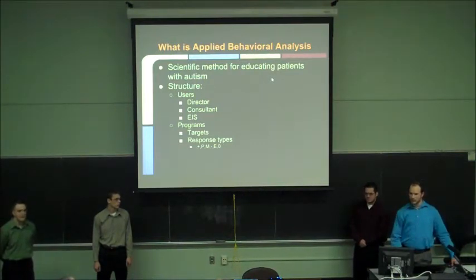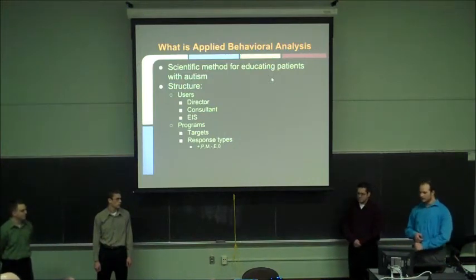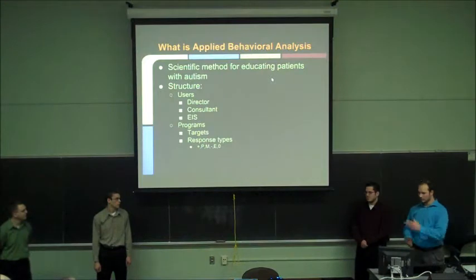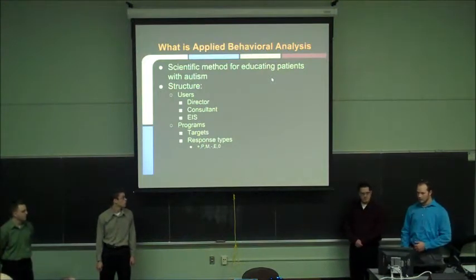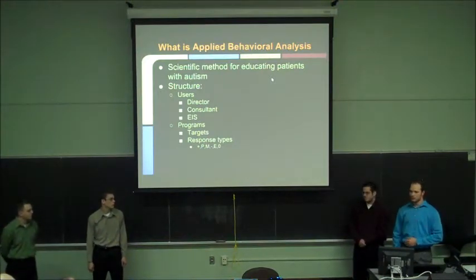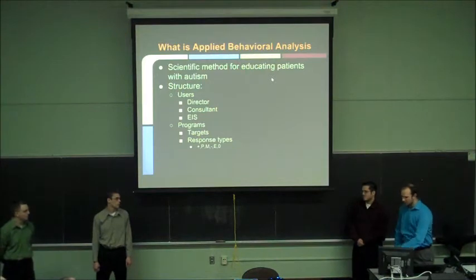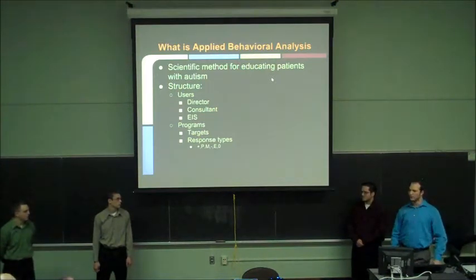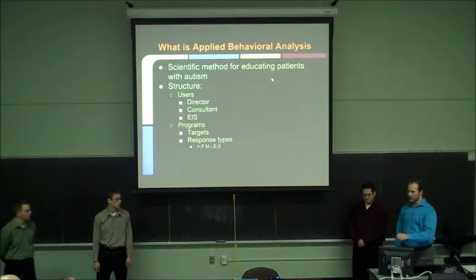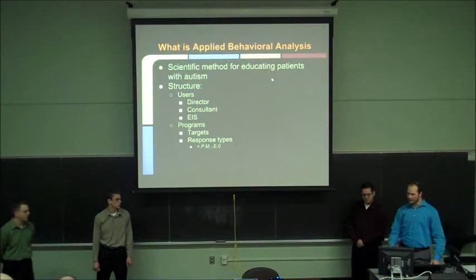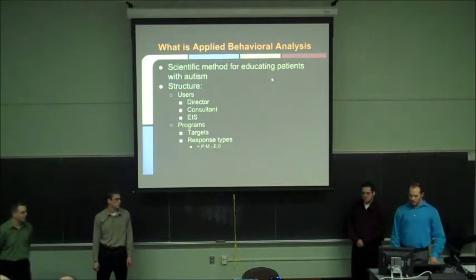There are different types of responses for the data collection. A plus sign indicates they did it perfectly — you tell them to pick up a pen, they picked up a pen. P means they were prompted, so you had to tell them and show them the pen and then they did it. M means you model it, so you would actually take their hand, take them to the pen, and show them how to physically do it so they get that motion down. A minus sign means they didn't do it correctly.